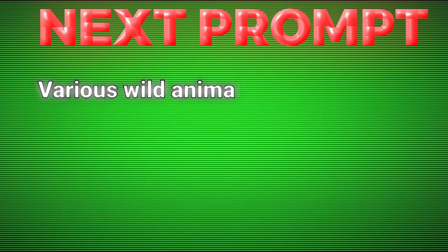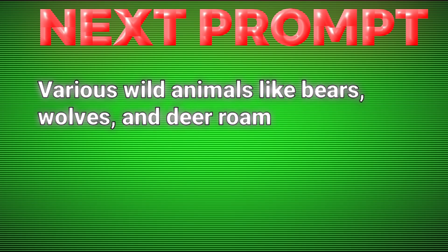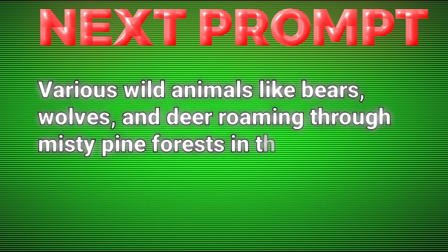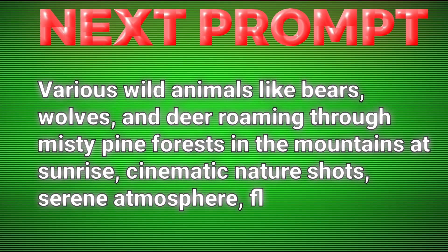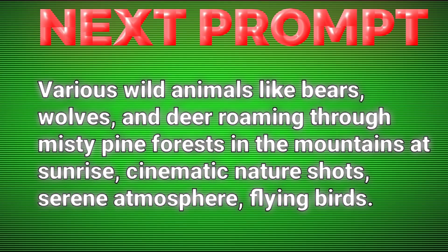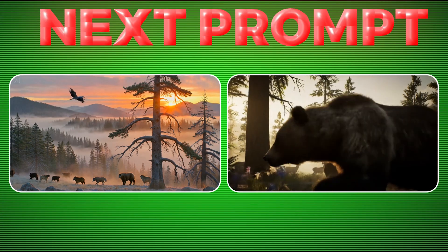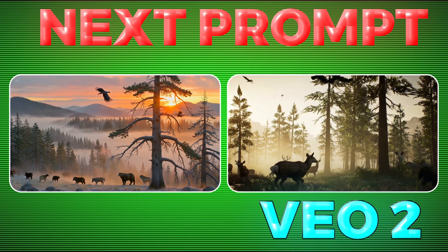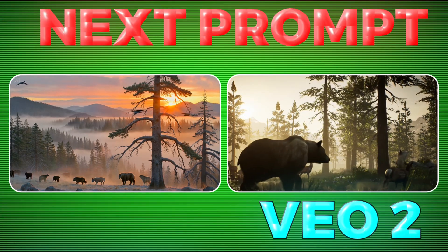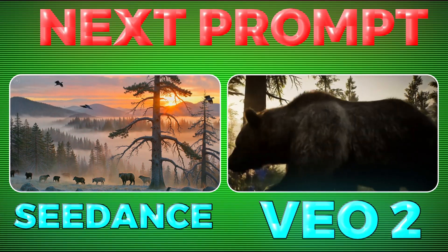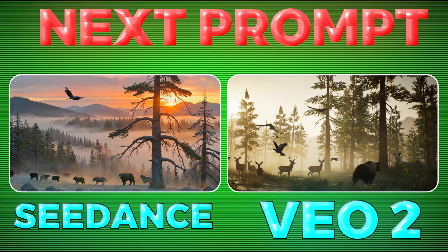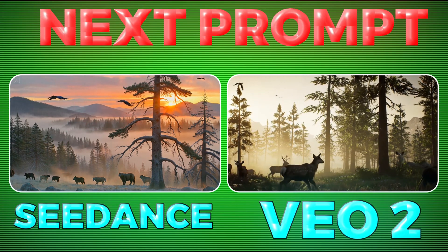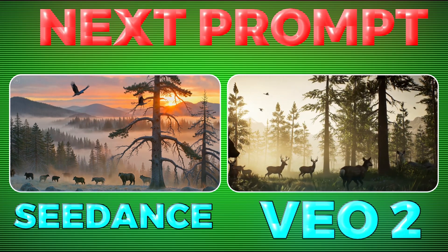Now our next prompt: various wild animals like bears, wolves, and deer roaming through misty pine forests in the mountains at sunrise — cinematic nature shots, serene atmosphere, flying birds. This prompt gave a very good result for VEO, where it carefully considered the camera angles and showed the animals mentioned in the prompt. But in Cdance, neither the bear nor the deer is visible, it's unclear what animals are shown, and even the flight of the birds doesn't look correct.